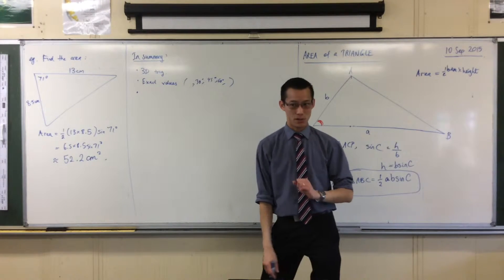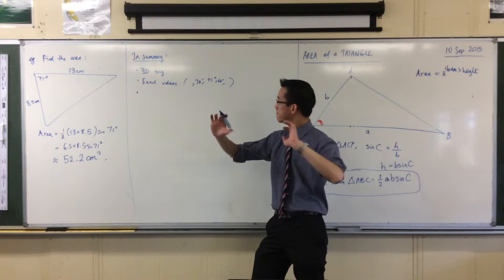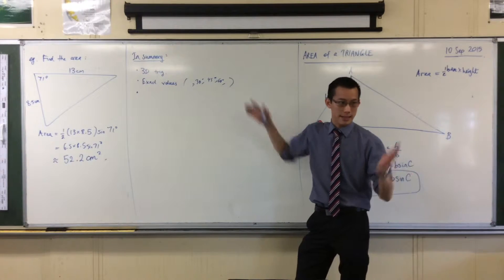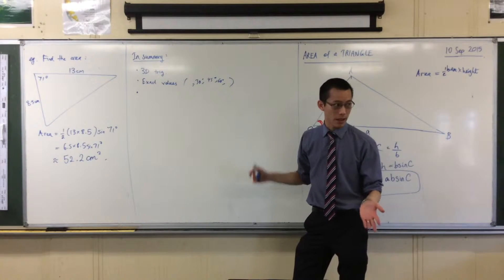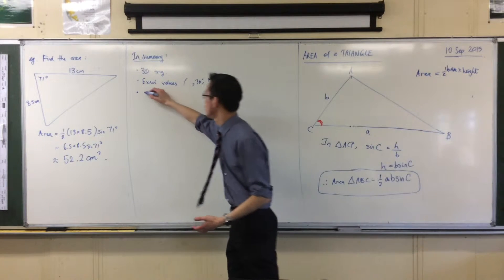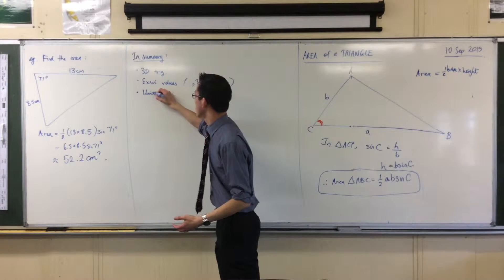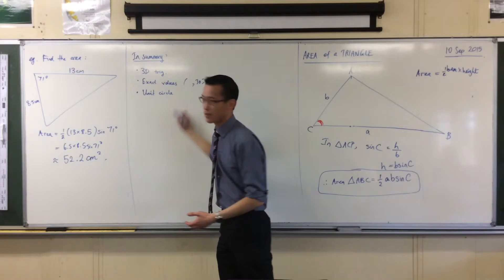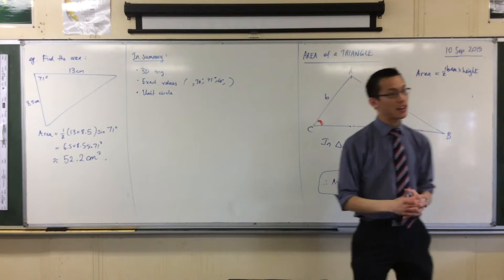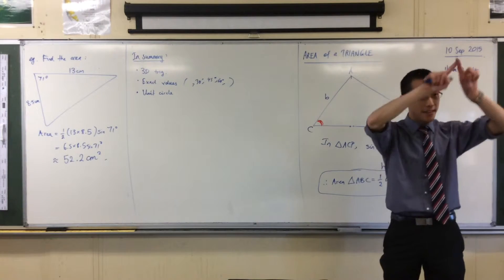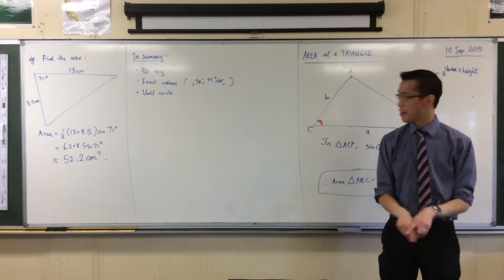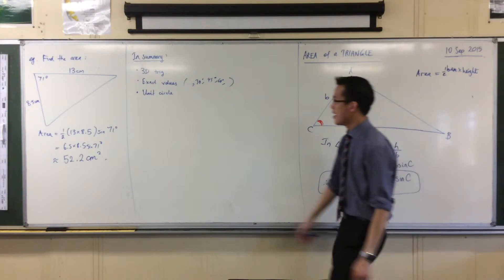From exact values, we said these angles are all acute — they're less than 90 degrees. But we want to be able to go past that, so we introduced the unit circle. We said you can think about sine and cos by thinking about this circle and its coordinates rather than just triangles.